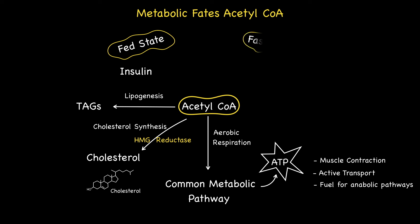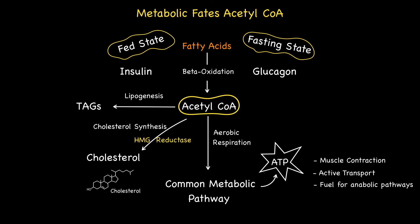Let us now focus on the fasting state. During prolonged fasting, the body turns to stored fats and fatty acids as the major energy source for the tissues. Under the action of the hormone glucagon, fatty acids enter into beta-oxidation to release large amounts of Acetyl-CoA, which are then diverted into a new metabolic pathway known as ketogenesis, which produces ketones. These ketones then become the major energy source for the brain.